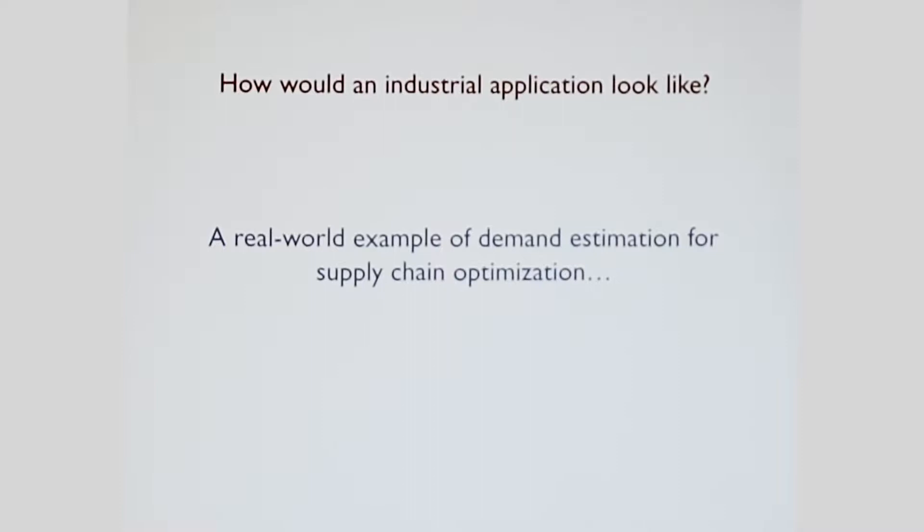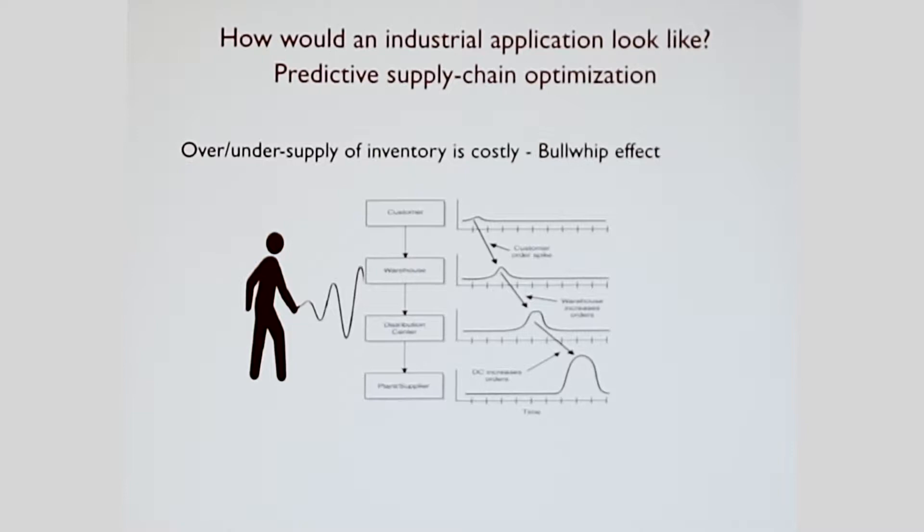Before we get into the formalism, I thought it would be easier to digest if we start with a real world example of how we actually got this problem from supply chain optimization. If any of you are in operations management group, there's this very famous concept in supply chain management called the bullwhip effect. That means if there's any small uncertainty in customer demand, as you go upstream in the supply chain, by the time you hit the supply level, that uncertainty grows to become very large. That can be extremely costly for the supplier. So it's very important for them to be able to predict customer demand well.